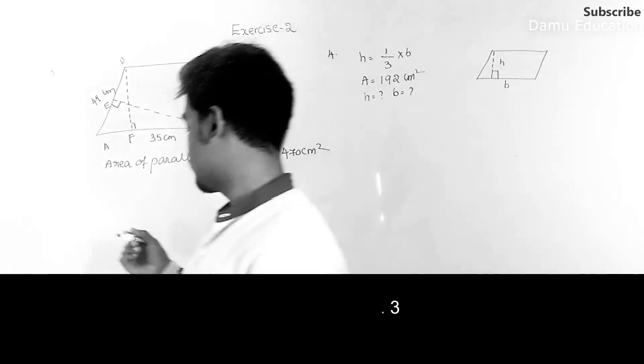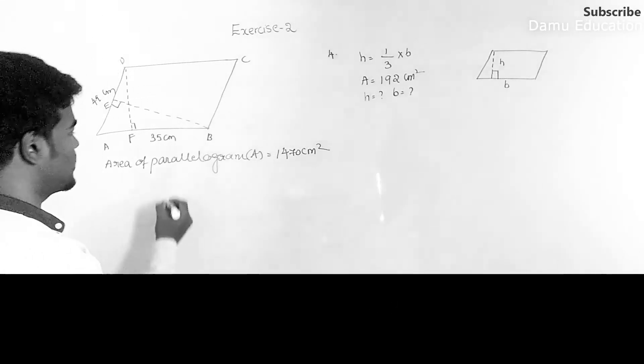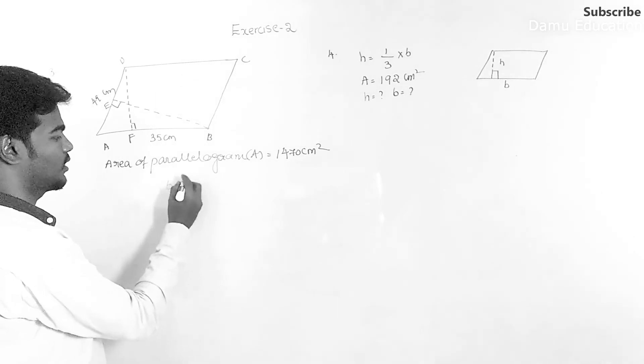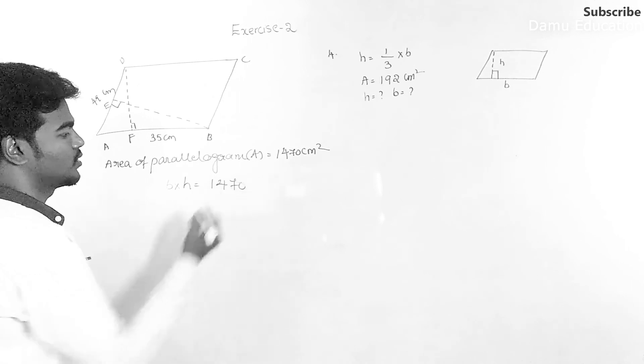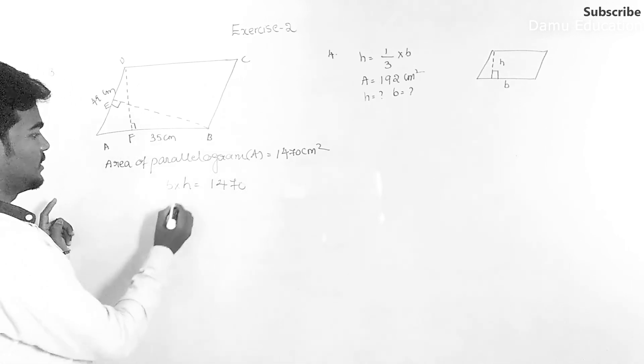So area of parallelogram is base into height. Let's take base will be AB, and the corresponding height will be DF.